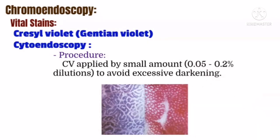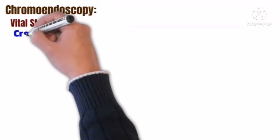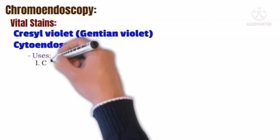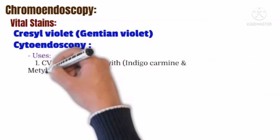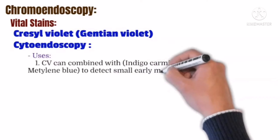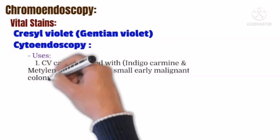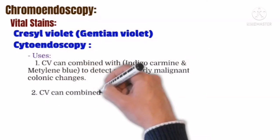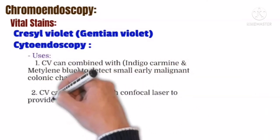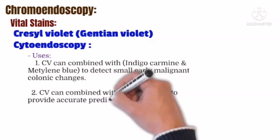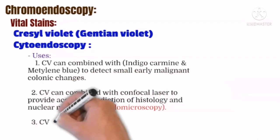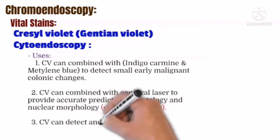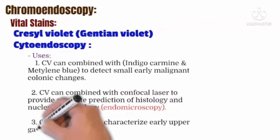Uses of cresyl violet chromoendoscopy include combining with indigo carmine and methylene blue to detect small early malignant colonic changes, combining with confocal laser to provide accurate prediction of histology and nuclear morphology — which is called endomicroscopy — and detecting and characterizing early upper gastrointestinal cancer.